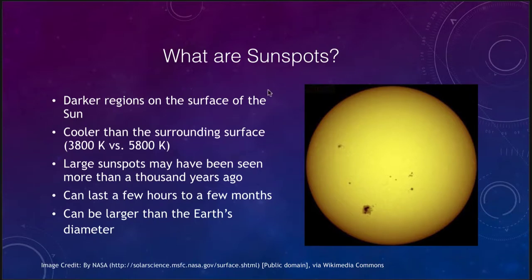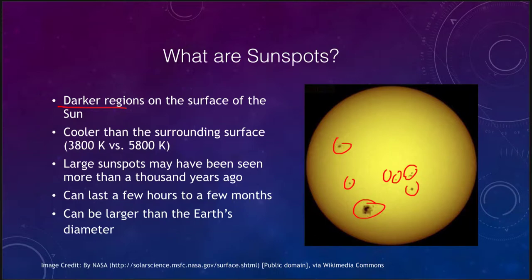Sunspots — what are they? They are dark regions on the surface of the Sun. When you look at an image of the Sun's photosphere you can pick out sunspots, larger ones and smaller ones scattered around, along with sunspot groupings. They are dark because they are cooler than the surrounding surface, still incredibly hot — almost 4,000 degrees compared to 6,000 for the surrounding Sun.